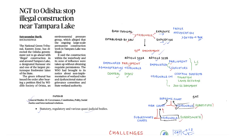Under GS Paper 2, statutory, regulatory, and quasi-judicial bodies are part of the syllabus — and tribunals are quasi-judicial bodies. You need to understand not just the constitutional provisions but also the challenges these bodies face. Tribunals are judicial or quasi-judicial institutions established by law in India. A quasi-judicial body is a non-judicial body that can interpret law, generally in the form of arbitration panels or tribunals.